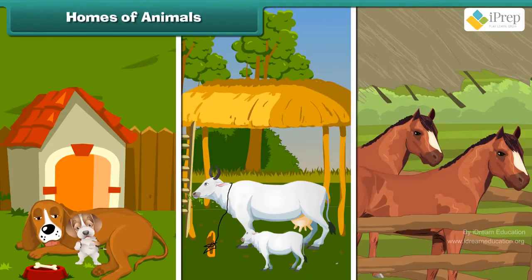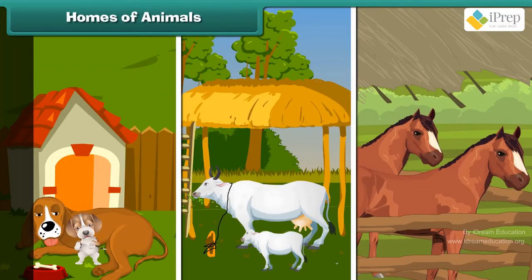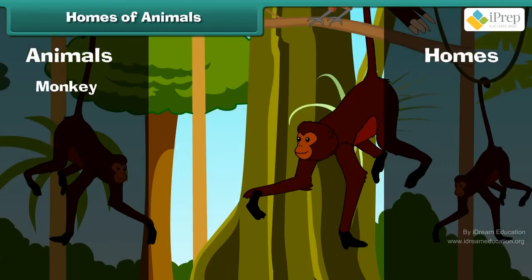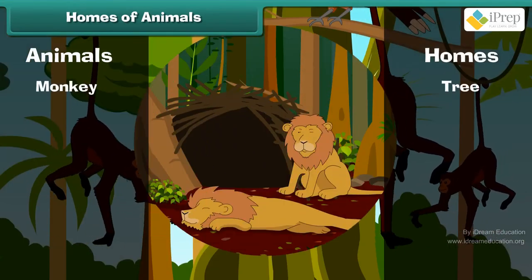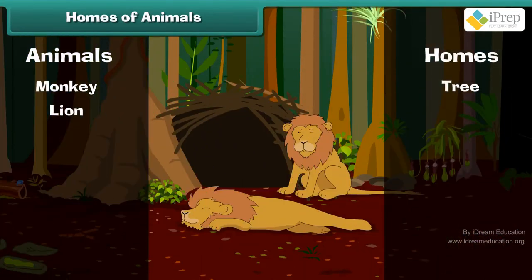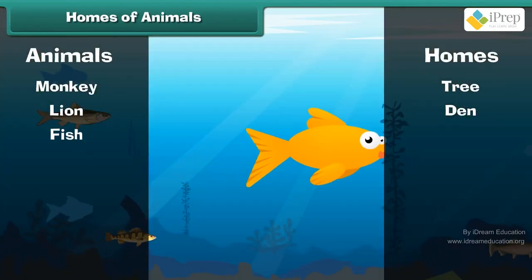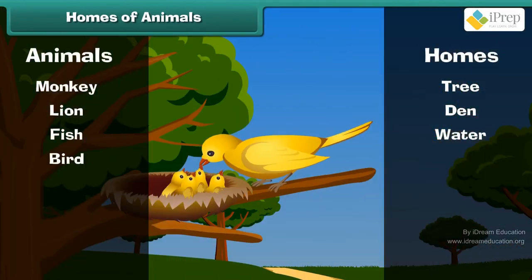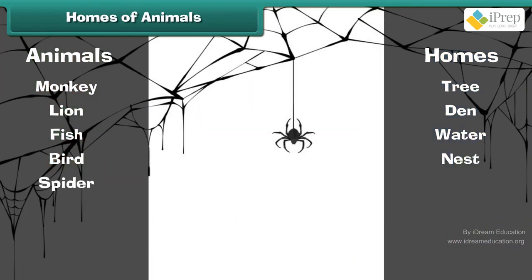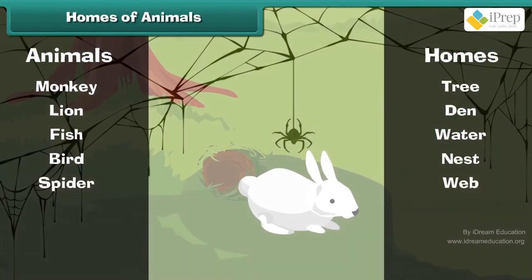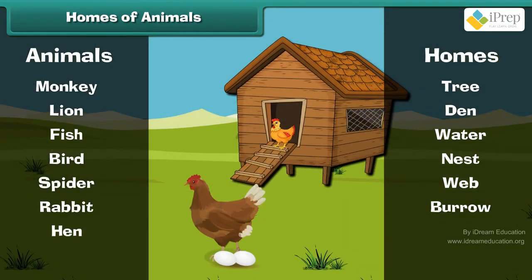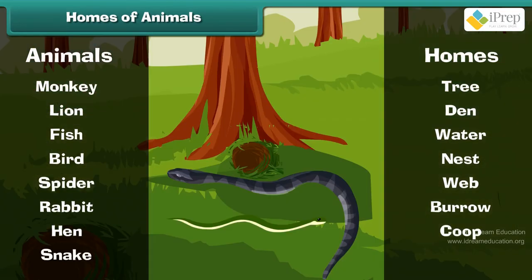Animals and their homes: Monkey lives in a tree, Lion in a den, Fish in water, Bird in a nest, Spider in a web, Rabbit in a burrow, Hen in a coop, and Snake in a hole.